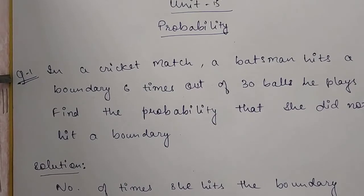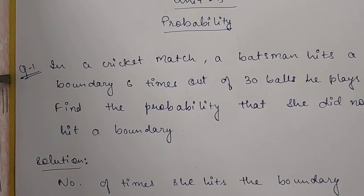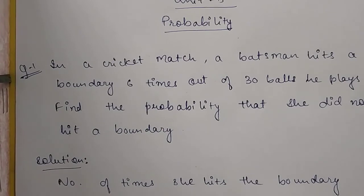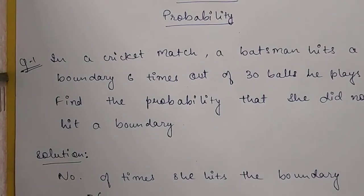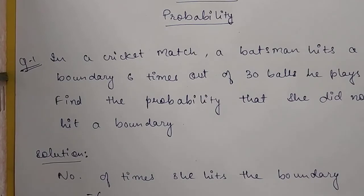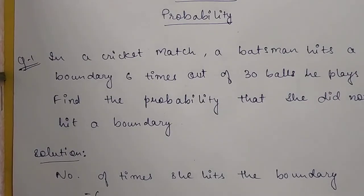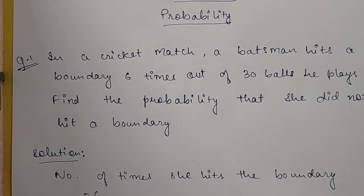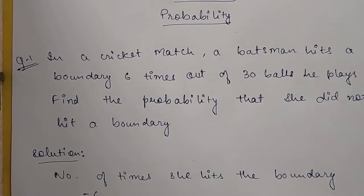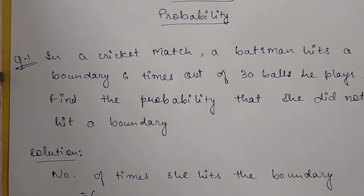Mathematicians did so many experiments that they ultimately arrived at very valid results, and they had to understand the mathematics behind gambling. This was a revolution when probability originated. Probability talks about chances, and this branch evolved so much that in sports, weather forecasting, statistics, and other fields, probability plays a very important role.